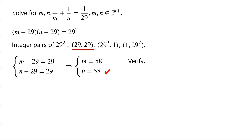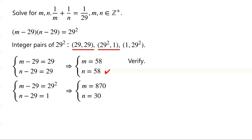For integer pair (29 squared, 1), we have m minus 29 equals 29 squared, and n minus 29 equals 1. So m equals 29 squared plus 29, which equals 29 times 30, which equals 870. And n equals 29 plus 1, which is 30. We can verify this: when m equals 870 and n equals 30, the left-hand side equals 1/870 plus 1/30, which equals 1/870 plus 29/870, which equals 30/870, which equals 1/29, equal to the right-hand side. So it is a solution of the original equation.